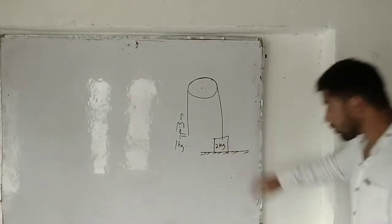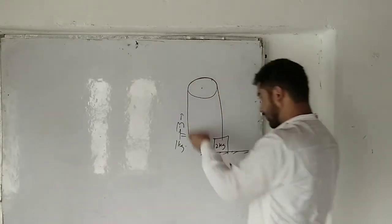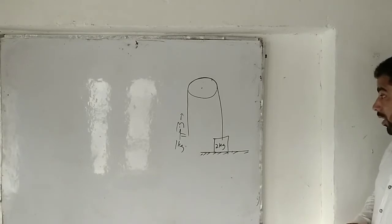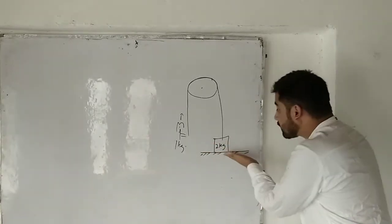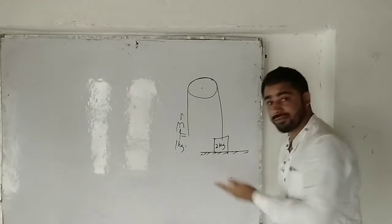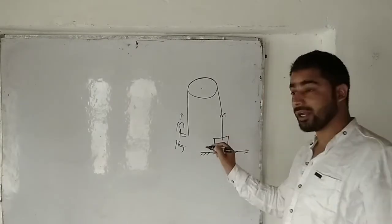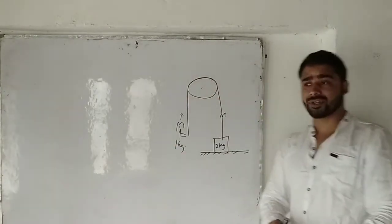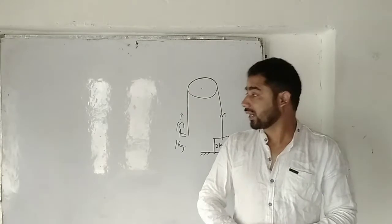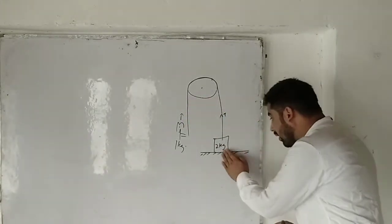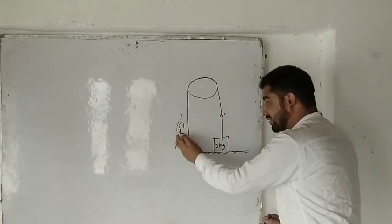The 2 kg block initially rests on the horizontal surface. The cat moves upwards relative to the string and achieves some acceleration. While this block remains in contact with the surface, one important thing: tension always acts away from the body as a consequence of Newton's third law.